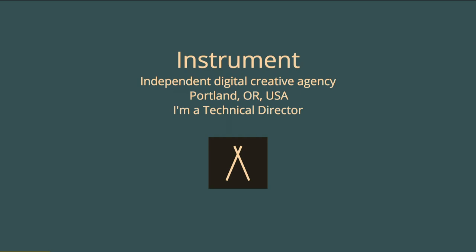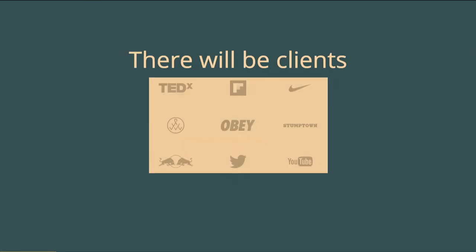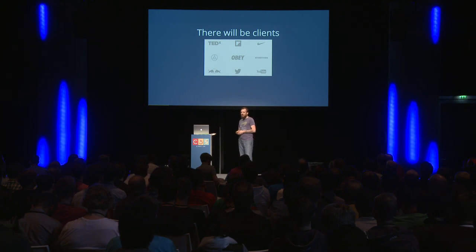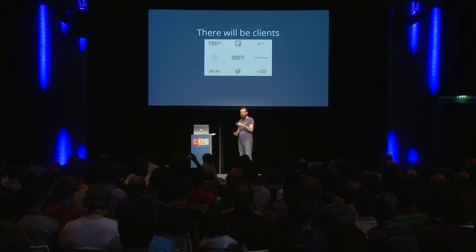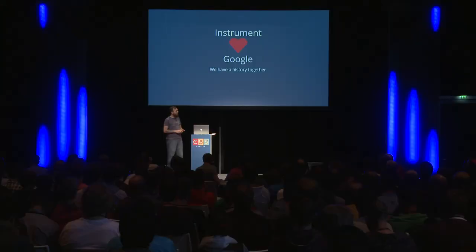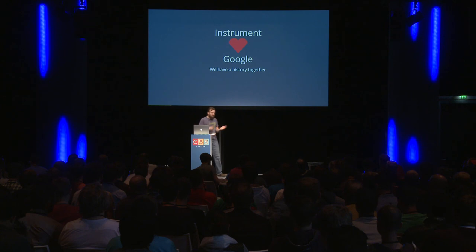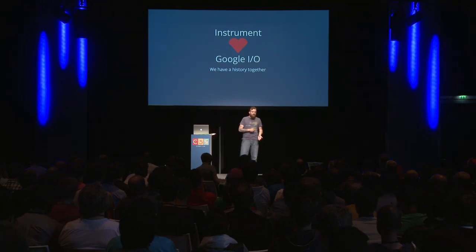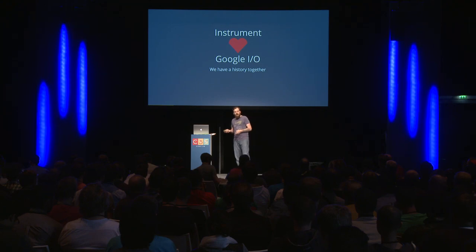So Google I/O and Instrument — this is where I work. I'm a technical director there. We're a creative agency of about 100 people and we actually work in an old shipbuilding building. We've been doing work with Google for about five years and done over 100 projects of varying sizes. Google I/O is an annual developer conference where they bring in developers and show them new hardware and software APIs.